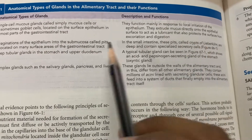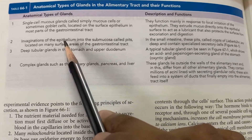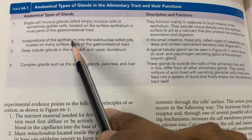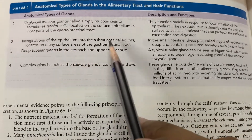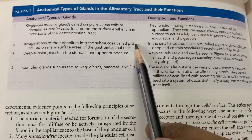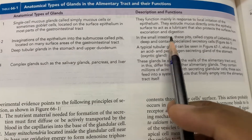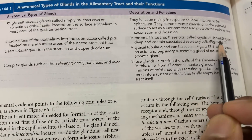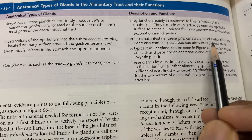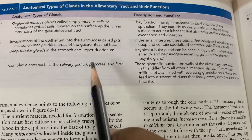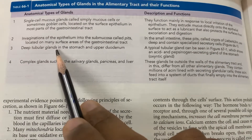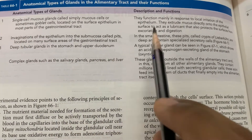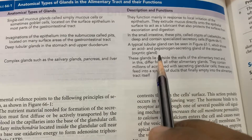Goblet cells function mainly in response to local irritation of the epithelium and they extrude mucus directly onto the epithelial surface to act as a lubricant. We also have invaginations of the epithelium into the submucosa called pits, and in the small intestine they are called crypts of Lieberkühn.